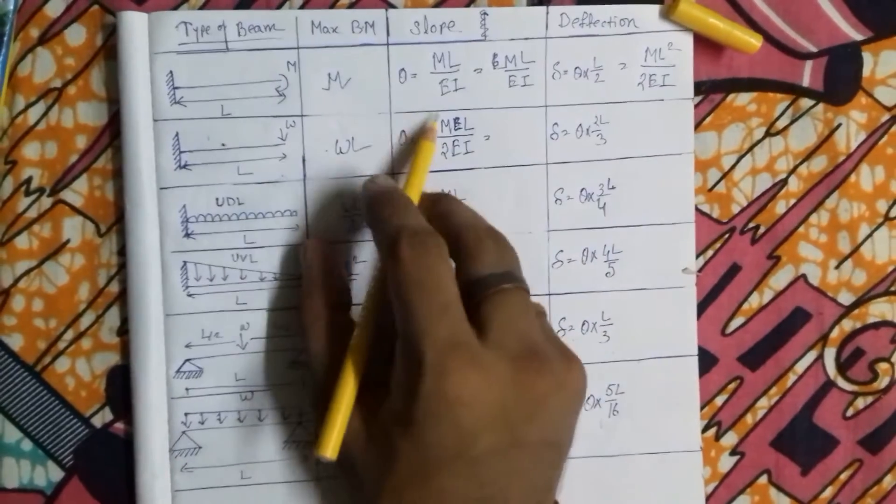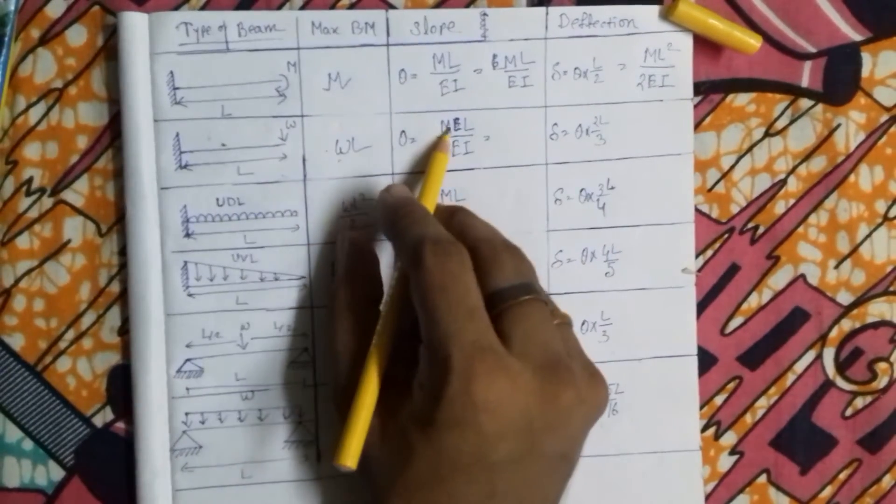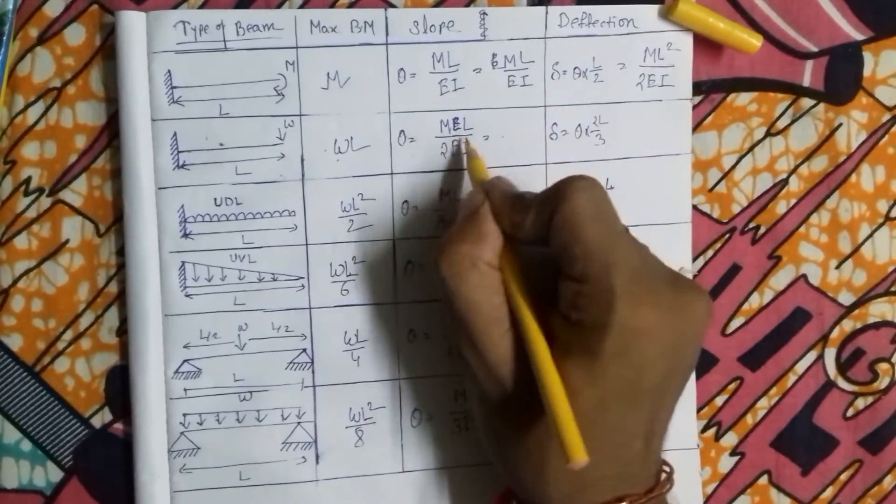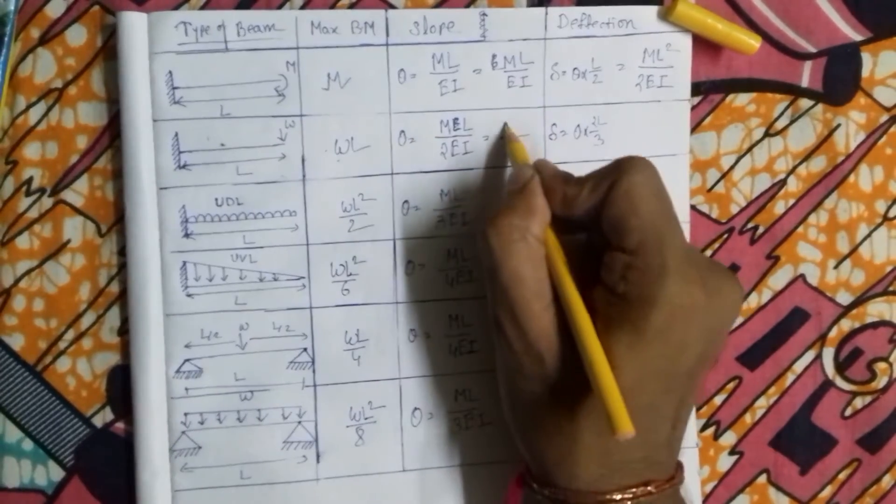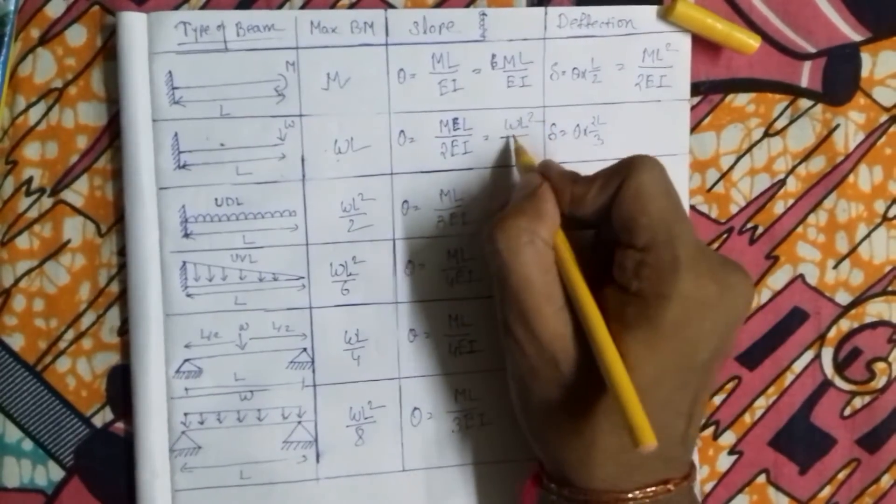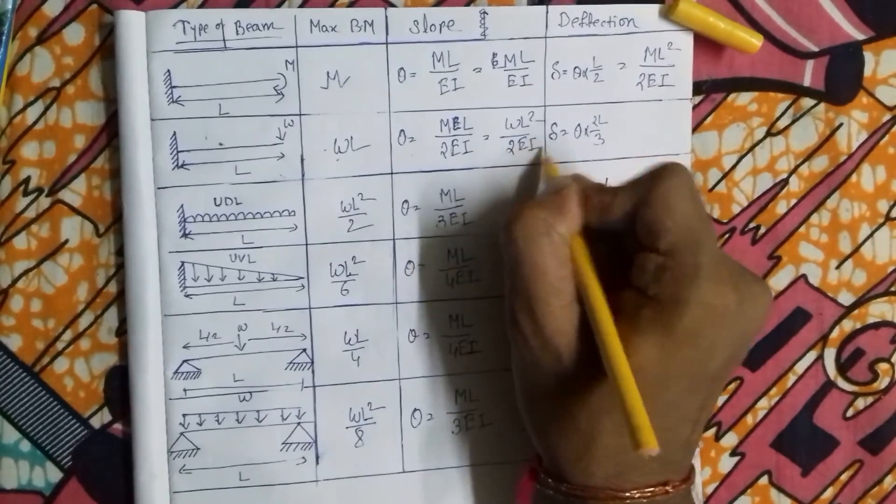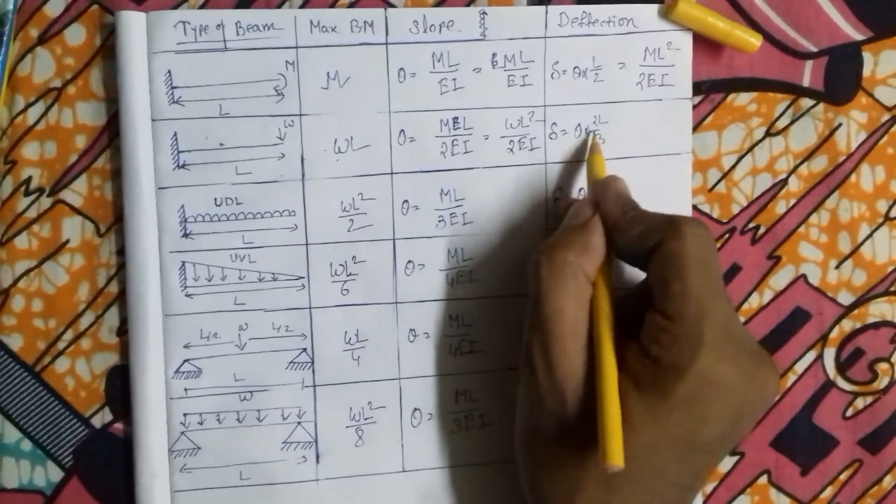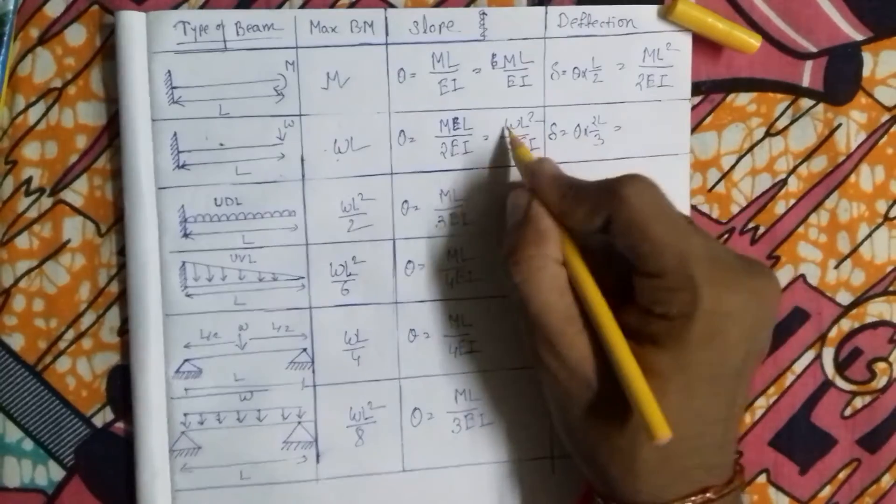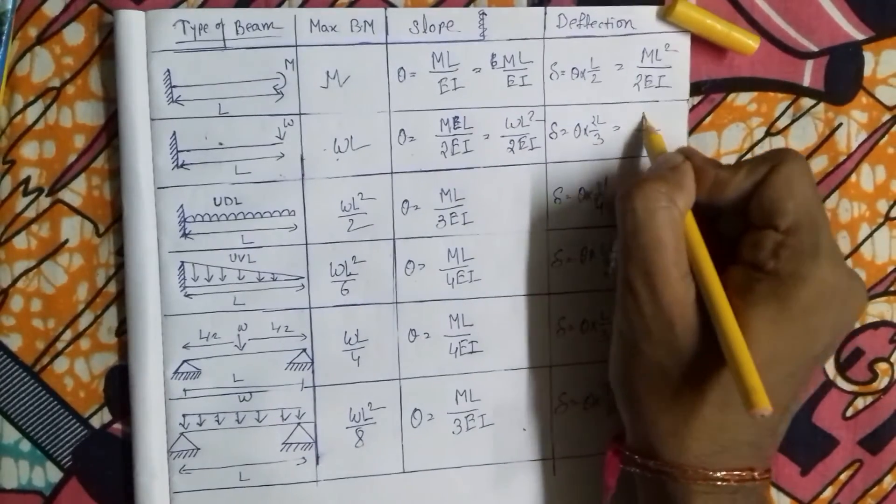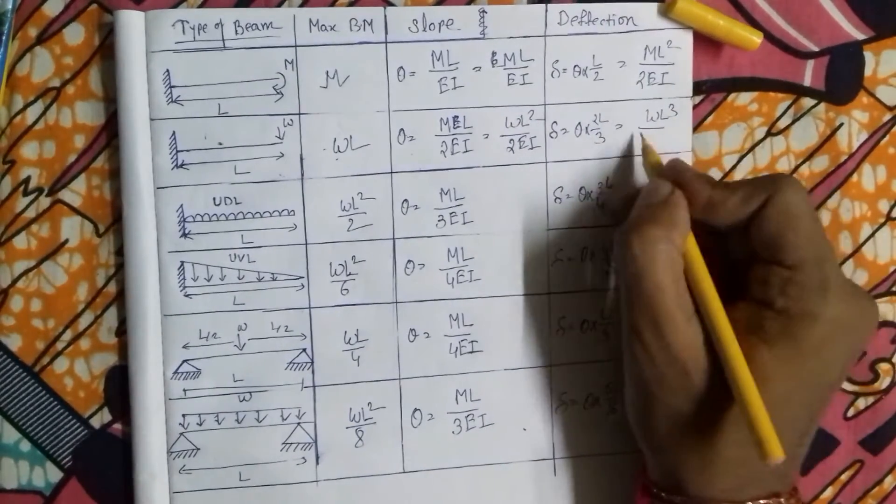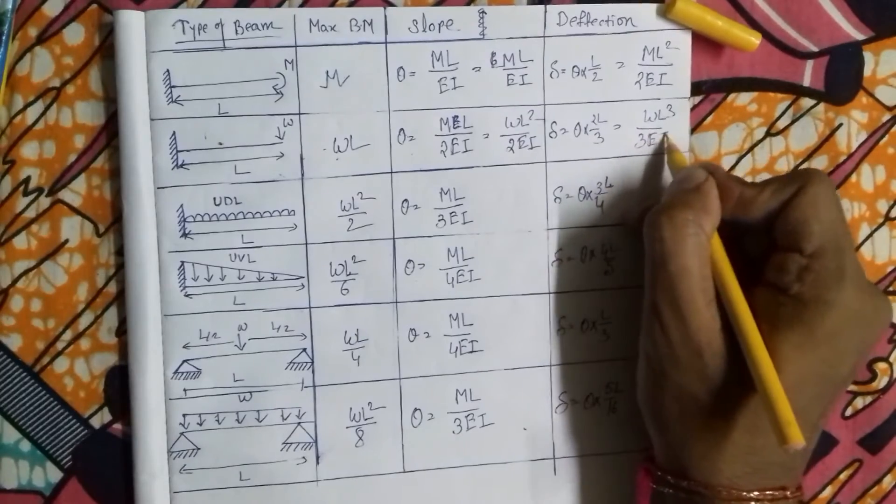Here we put the value WL substitute of M, so WL² by 2EI, and theta multiply by 2L, so WL³ by 3EI.